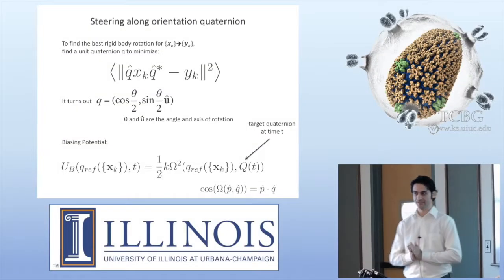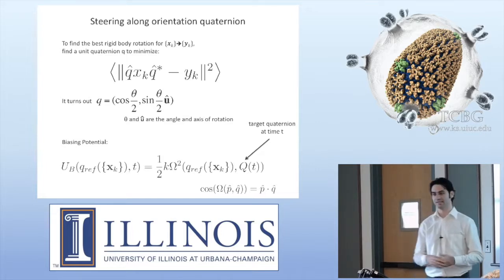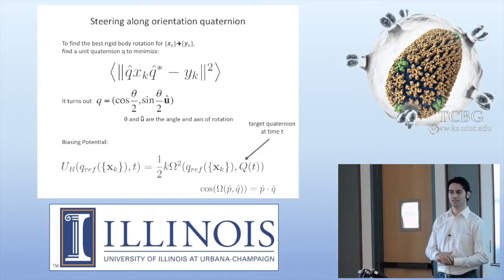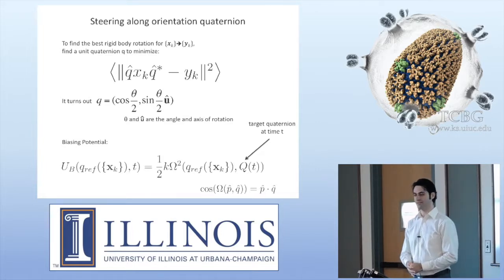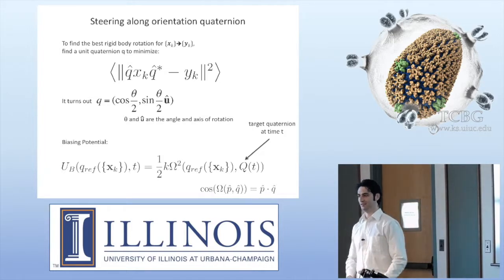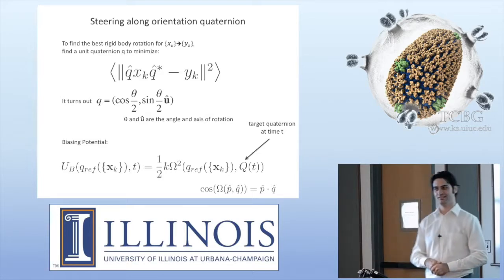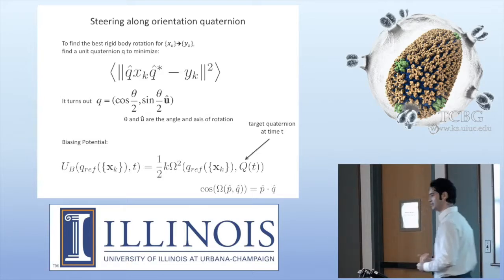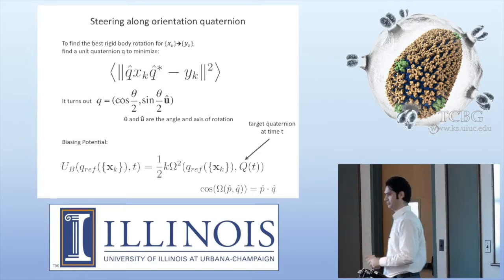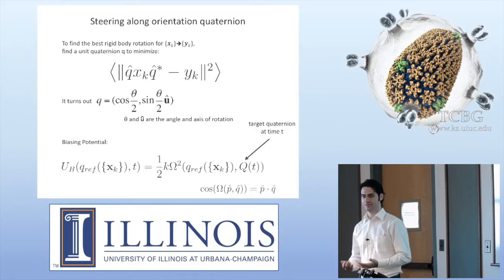Let's move on to the second part of the methodology, which is basically string method slash bias exchange umbrella sampling. So you have generated a good pathway, and now you want to optimize the pathway, refine your pathway, and then sample around the pathway to get the free energy.